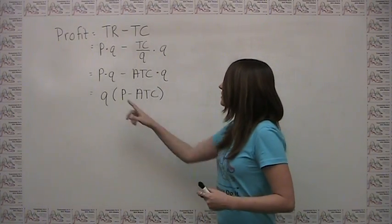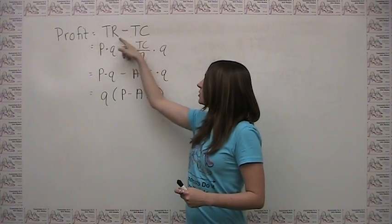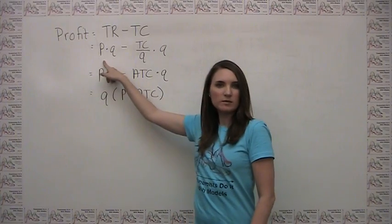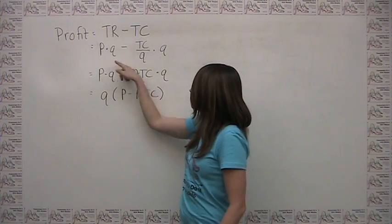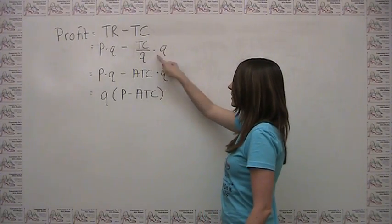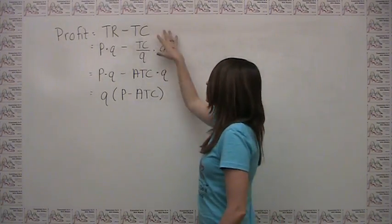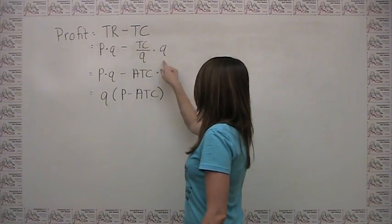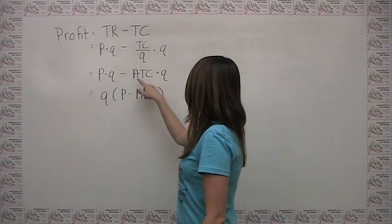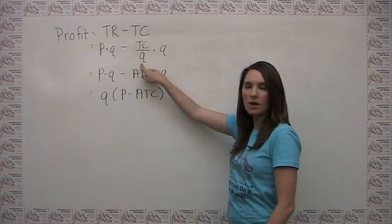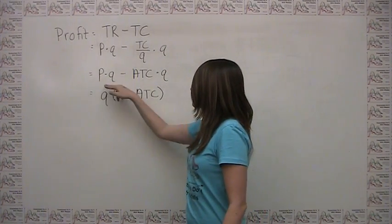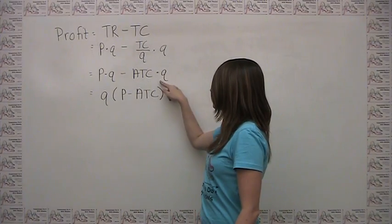Profit is just equal to total revenue minus total cost. Total revenue is just price times quantity. For total cost, all we've done is divide by Q and then multiply by Q, so we haven't changed the value at all — we've just represented it in a slightly different way. We'll notice that this is equal to average total cost times quantity. So profit equals price times quantity minus average total cost times quantity.